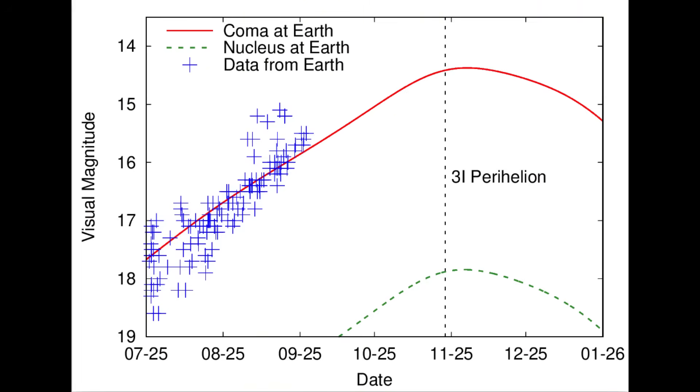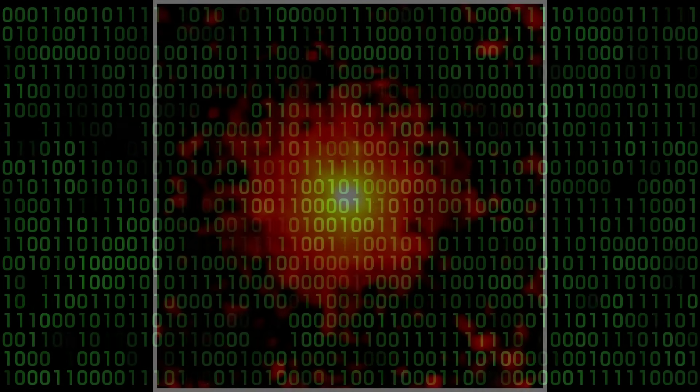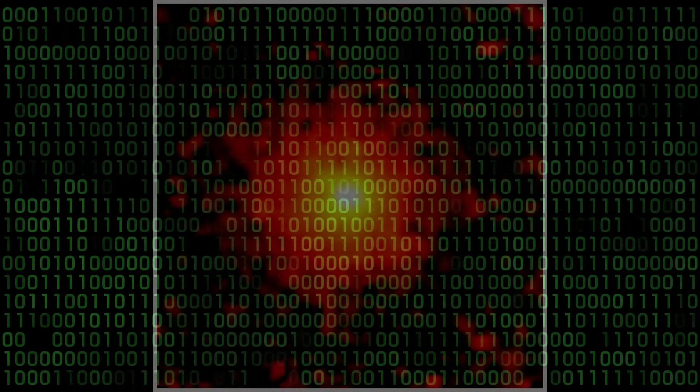The light itself held deeper secrets. Analysis of its frequencies was even more shocking. They matched the same range used by Earth's own communication systems. Researchers found patterns eerily similar to binary code, repeating clusters separated by equal gaps, a clear sign of information, not noise.